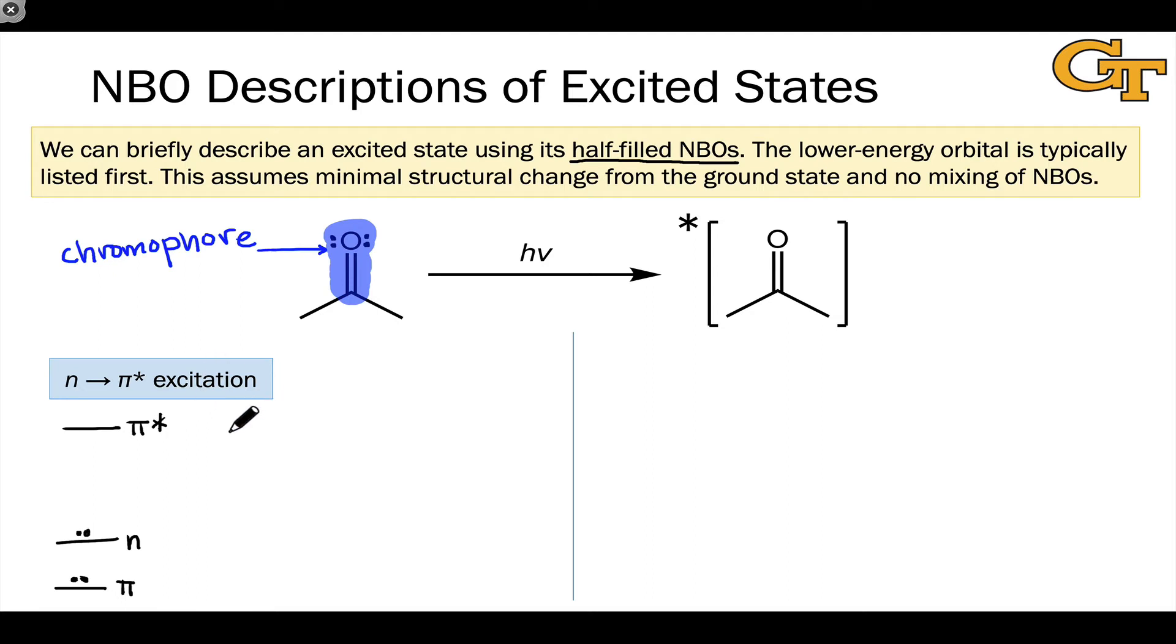So n to π* excitation corresponds to removing an electron from the n orbital and placing it in the π* orbital. To a zeroth-order approximation, all of the other orbitals are exactly the same. What really matters here is that we now have two half-filled orbitals: the π* orbital and the n orbital.